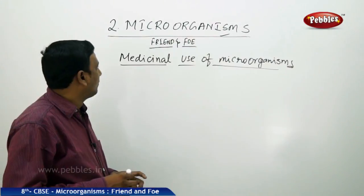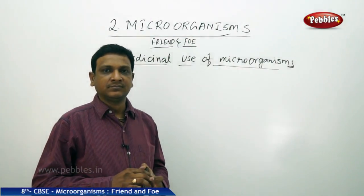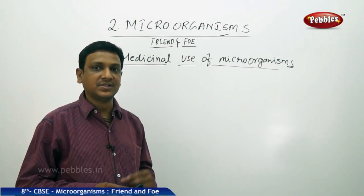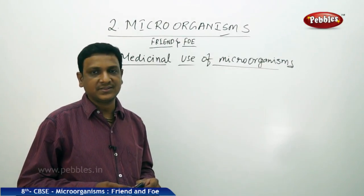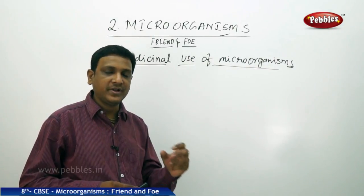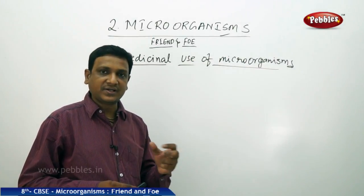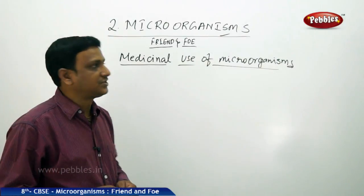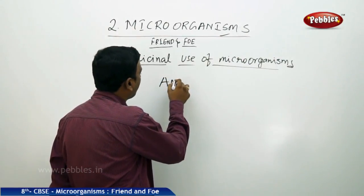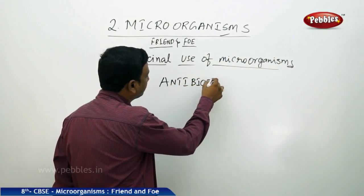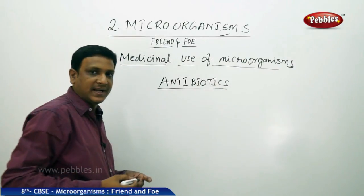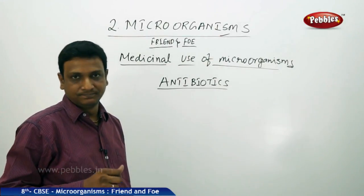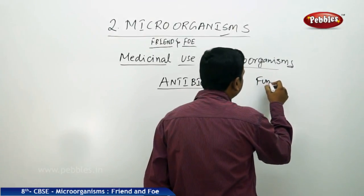Commercially, on a large scale, products like alcohol, acetic acid, and wine are produced by fermentation. Now let us look at the medicinal use of microorganisms. We learned that microorganisms cause diseases, but here we can also make use of microorganisms in controlling diseases. Certain materials extracted from microorganisms are used as medicines to cure other diseases - such medicines are called antibiotics. Antibiotics are medicines sourced from microorganisms, especially fungi and bacteria.